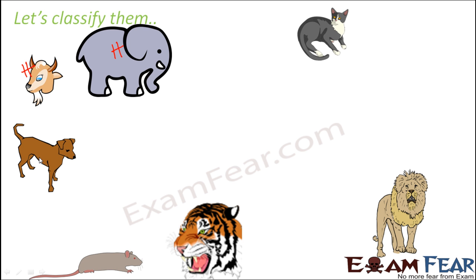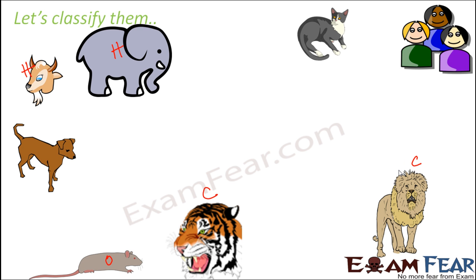A dog — based on its body structure and teeth type — is naturally a carnivore, though some dogs behave like omnivores. A rat is an omnivore because it eats both tiny insects and plant parts like cereals. Tiger is definitely a carnivore, eating only other animals, and similarly lions also eat only other animals.